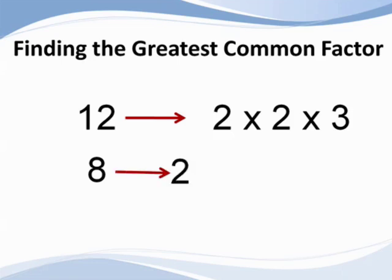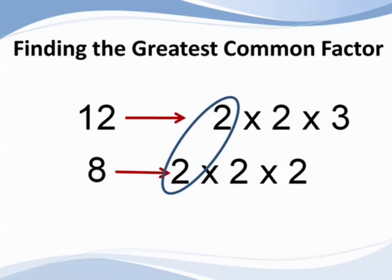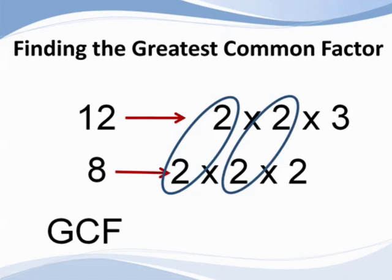Eight is equal to two times two times two. Remember the title of this lesson, finding the greatest common factor. So if we find all the factors that are in common, we will achieve our goal. By looking at the two lists of factors, we can see that both lists have a two in common. Therefore, we're going to circle those numbers. Again, there's another set of twos in common, which are circled. The greatest common factor is the product of the numbers in common. In this case, two times two, or four.